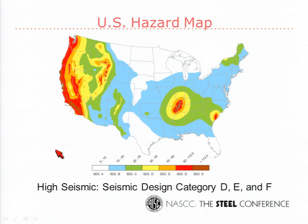This map shows what we mean by high seismic. Anything yellow and darker — from yellow to dark yellow to red — on the west coast, the Wasatch area, New Madrid, and Charleston is what we mean by high seismic. High seismic is defined as seismic design category D, and that's what gets you into AISC 341.